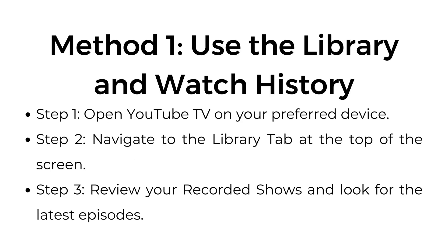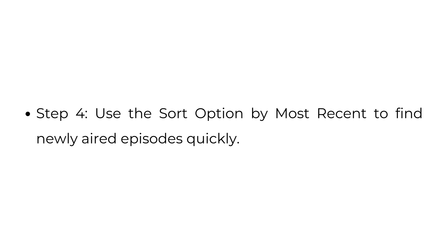Method number one: use the Library and Watch History. Step one, open YouTube TV on your preferred device. Step two, navigate to the Library tab at the top of the screen. Step three, review your recorded shows and look for the latest episodes. Step four, use the sort option by most recent to find newly aired episodes quickly.